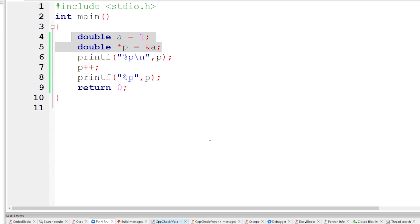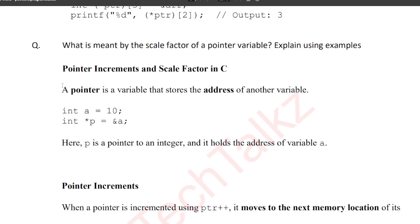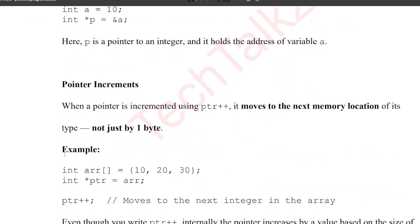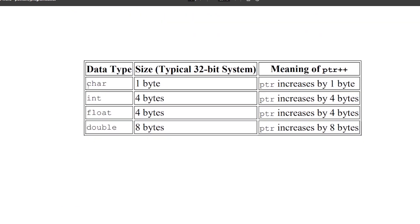For double, the variable reserves 8 bytes and 8 address locations. Float is 4 bytes. This is the pointer and pointer incrementing. In summary, the scale factor table: character type is 1 byte, integer type is 4 bytes, float is 4 bytes, and double is 8 bytes. The scale factor is the size of the data type that the pointer points to, and this is used internally when incrementing or decrementing a pointer.